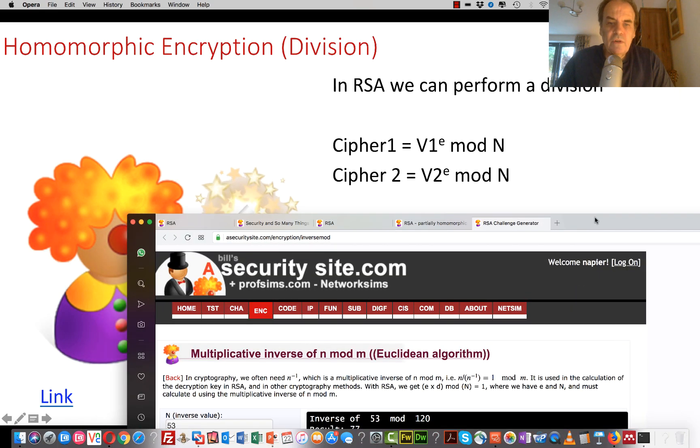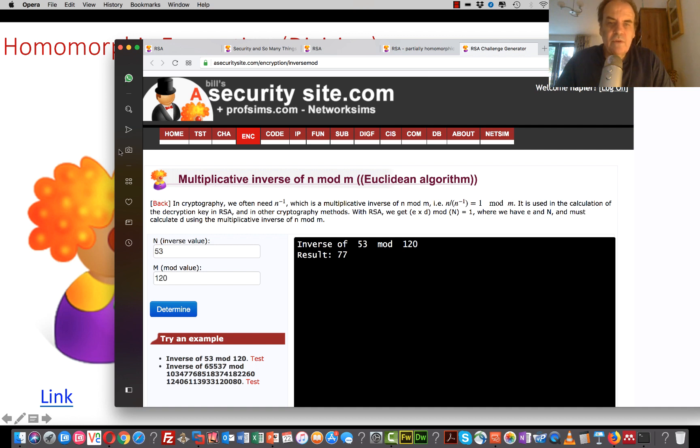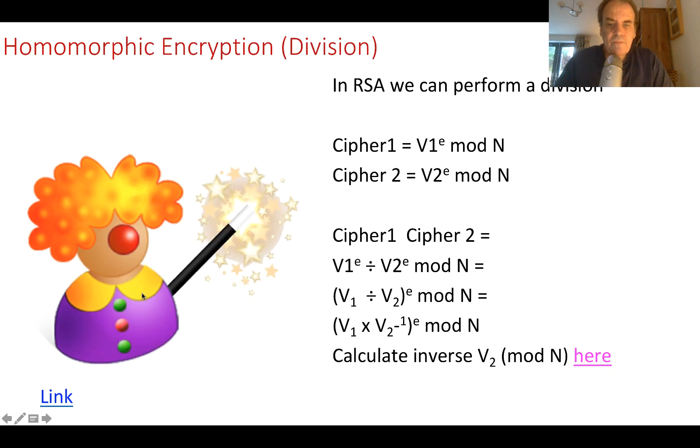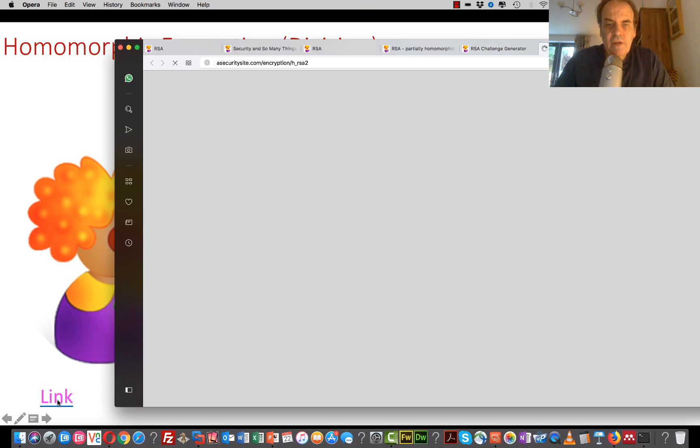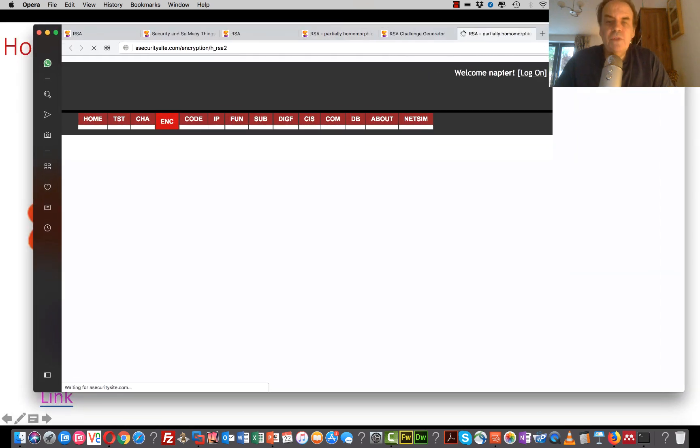Okay, so for a value that we might have, say we have 5 mod 41, and the result is 33. So it's that value that will actually, we take the cipher value, and then we'll take the inverse of it. So let's give that a try with some code.